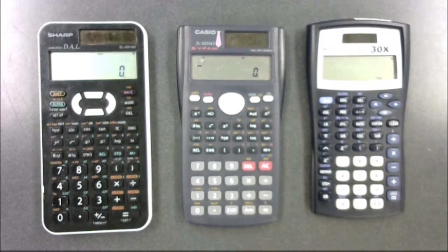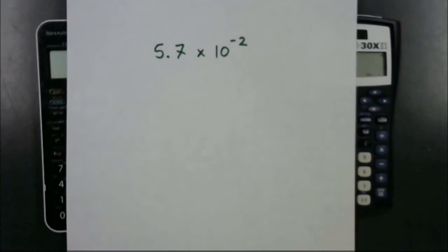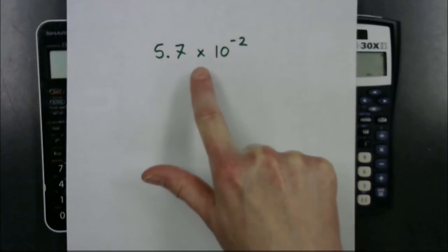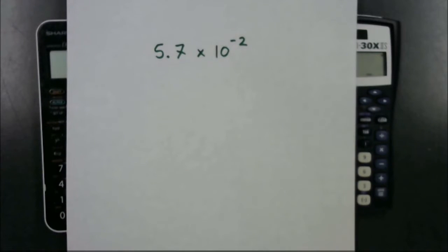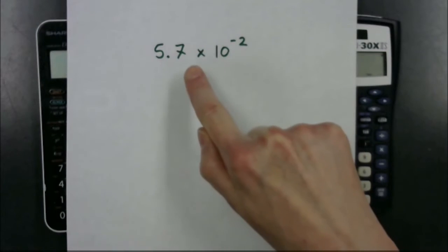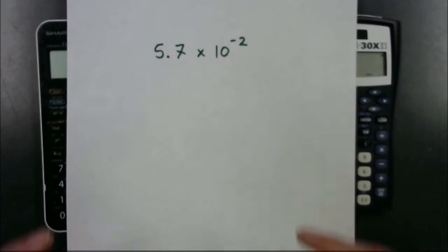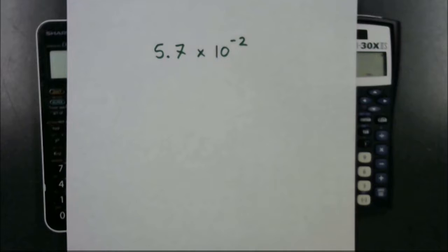The first thing we're going to talk about is how to type scientific notation into your calculator. If you want to type in a value like 5.7 times 10 to the power of negative 2, you could type it all out, but there is a button on a scientific calculator that does the 'times 10 to the power of' part for you. Using it is simpler and saves headaches — if you type the value without the scientific notation button and forget to put brackets around it when dividing, you might get a wrong answer.